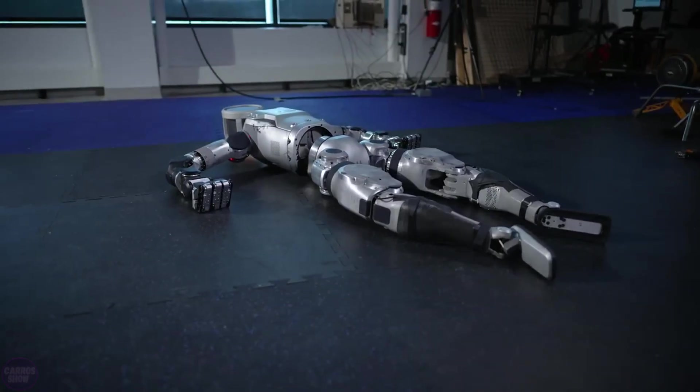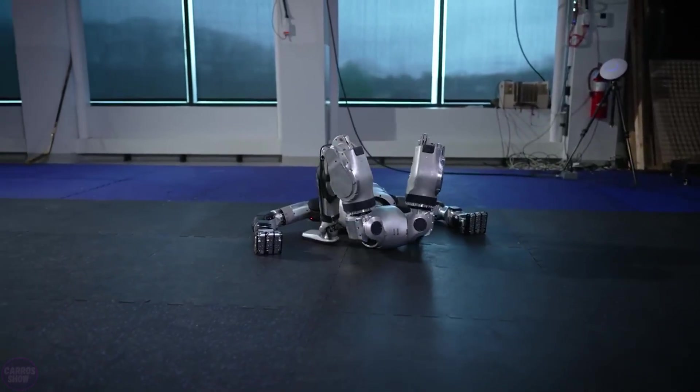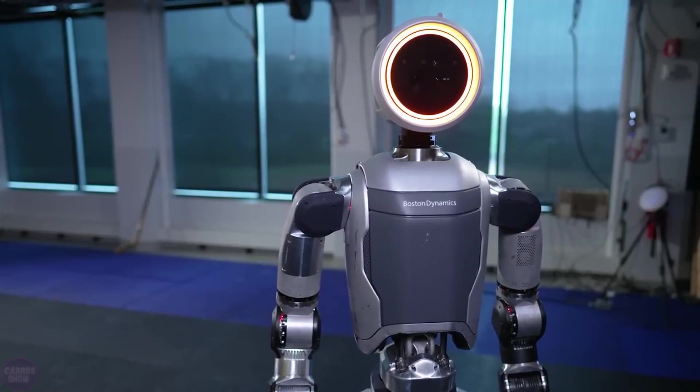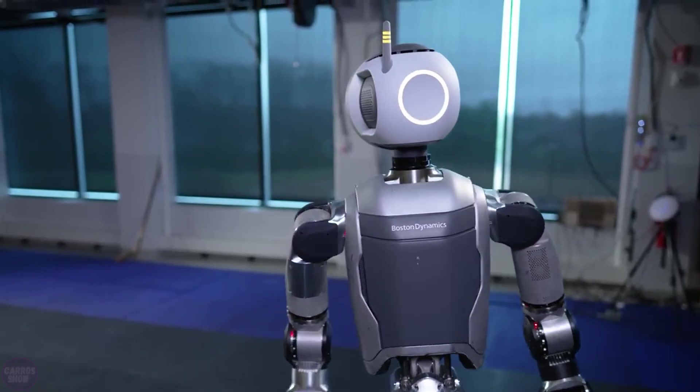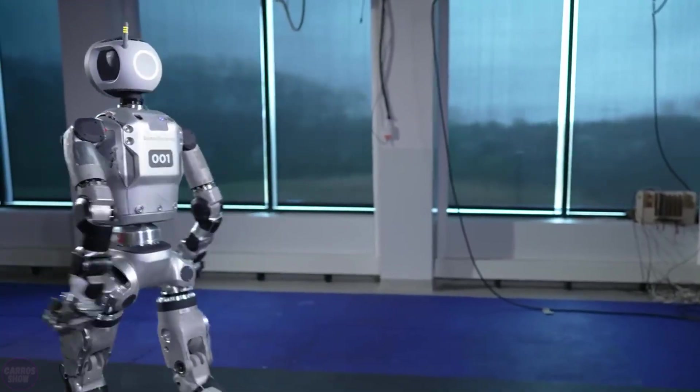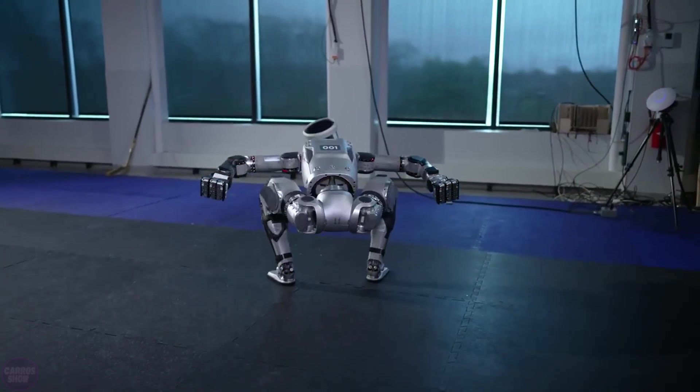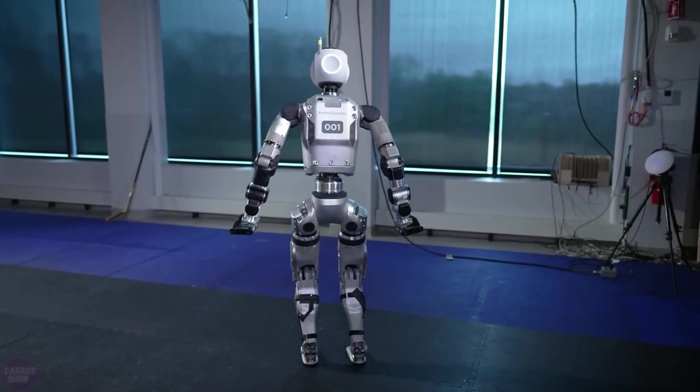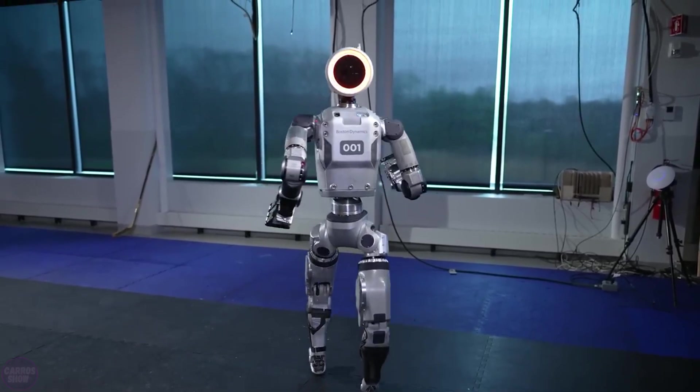According to company specialists, the second generation of Atlas robots has become even faster and more agile. The new model of Boston Dynamics robots will be tested at the testing ground at the Hyundai factory. Developers promised to provide more details about the robot and its design in the future. The company stated that it is the most dynamic humanoid robot in the world.